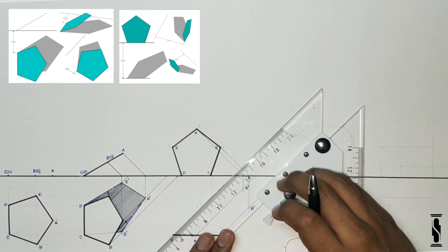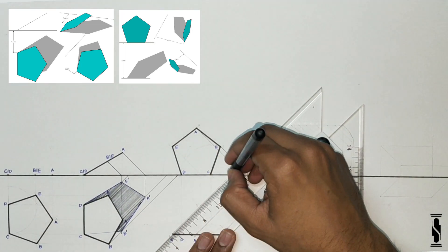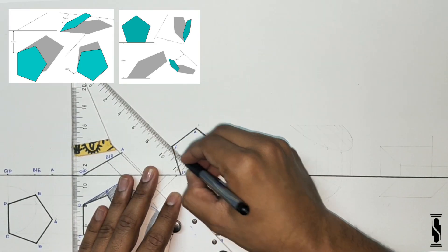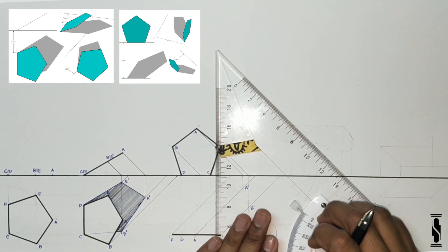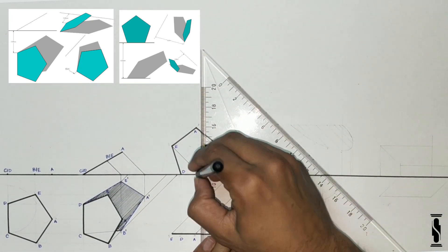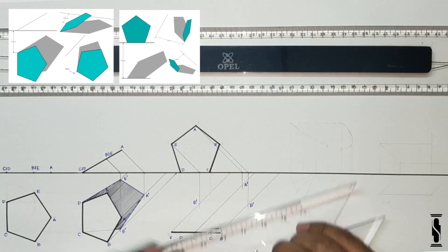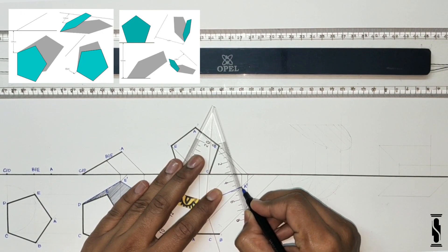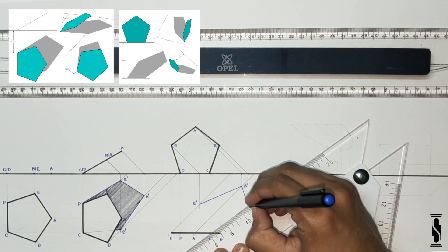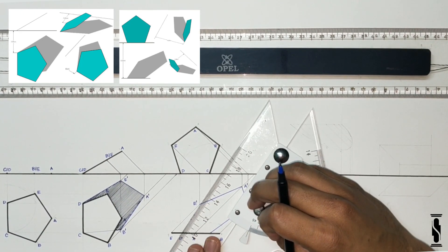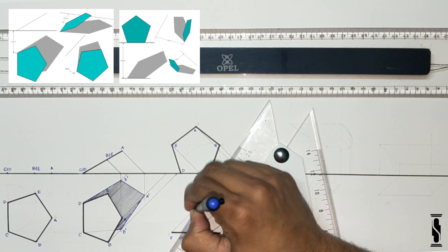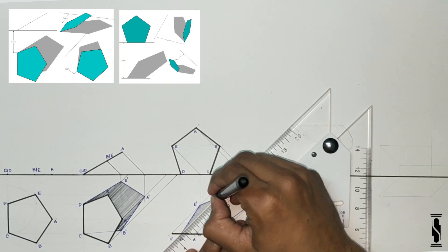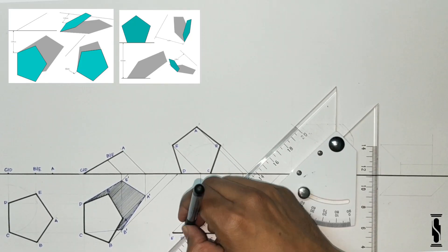Shadow of the plane will start from points C and D as it rests on HP. So join the points D, E dash, A dash, B dash and C to get the final profile of the shadow, and hatch it with light intensity lines.